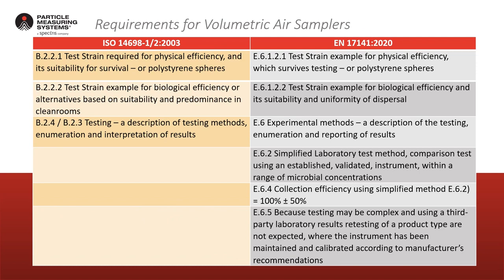Comparing ISO 14698 versus EN 17141 again: the test strain requirements and test methods are defined for both. E6-2 in 17141 talks about a simplified lab test method — a comparison against an established validated instrument. So if there's no provided information with your sampler for 17141, you can run a relatively rudimentary test. E6-4 specifies 100 percent plus or minus 50 percent. Results are performed in an open environment, sampling the flora and fauna in that area, which is a good reflection of what you're likely to see on a day-to-day basis.